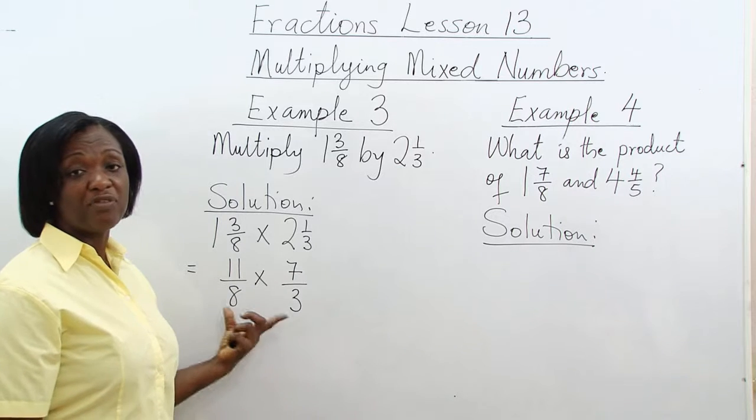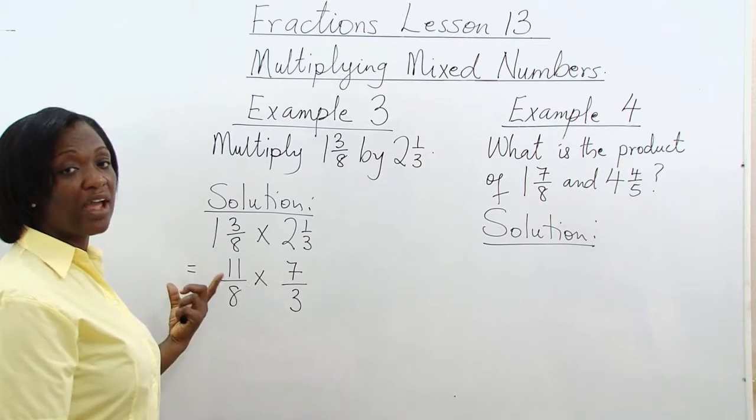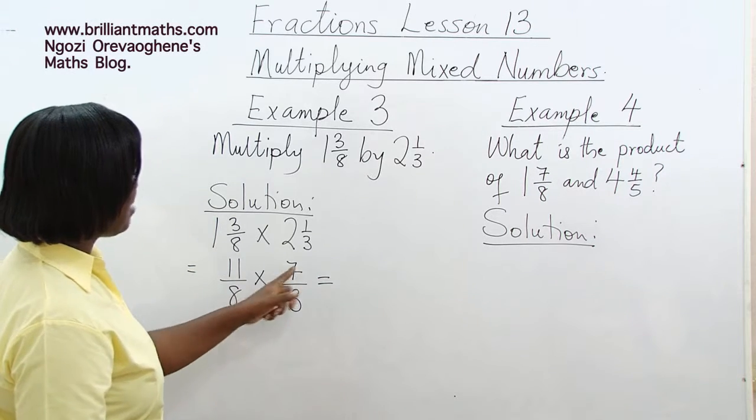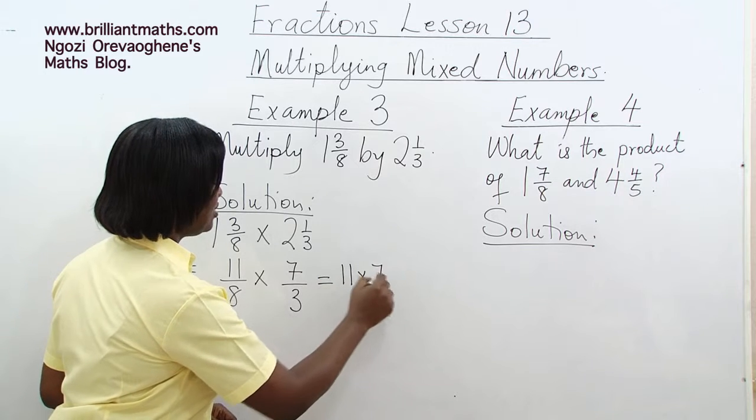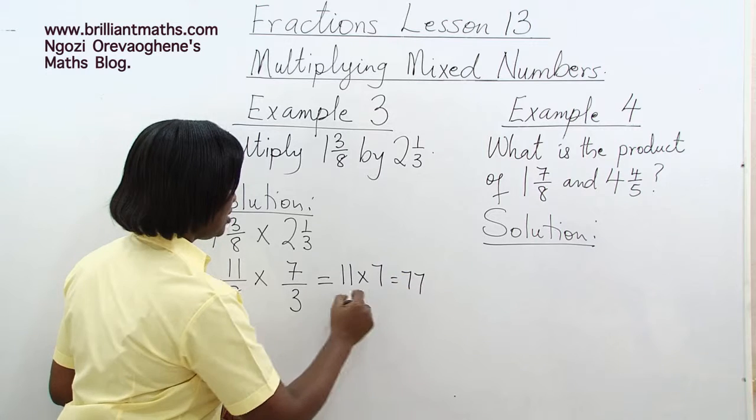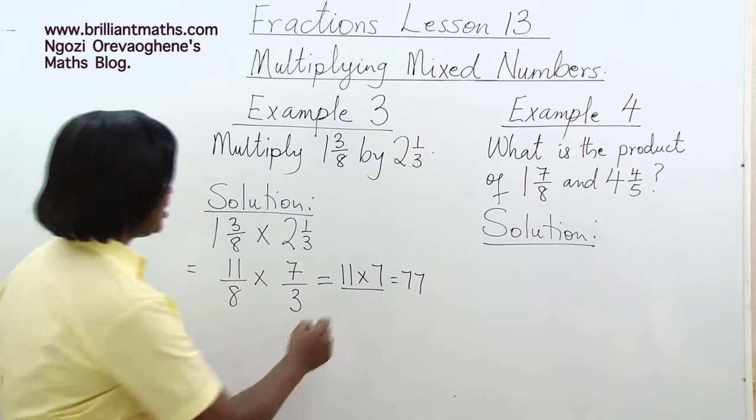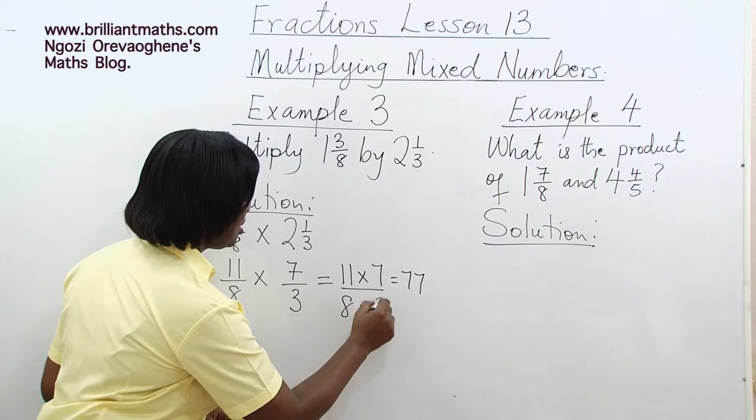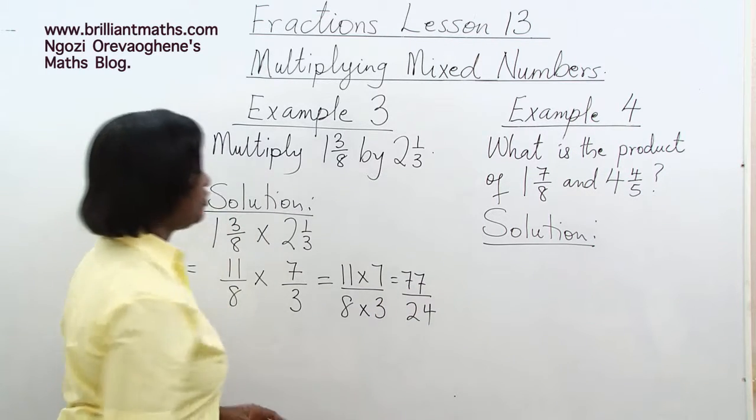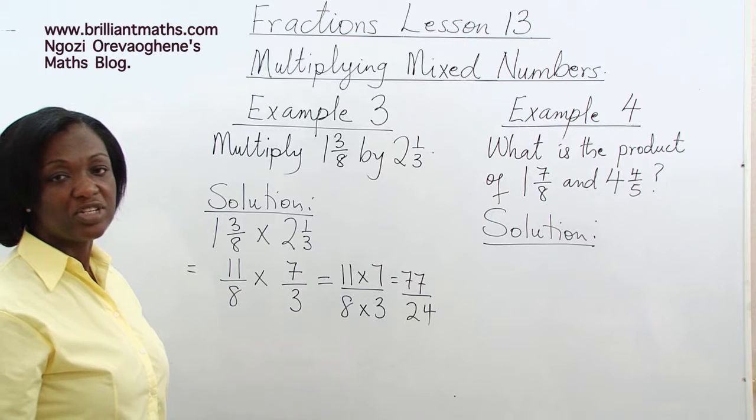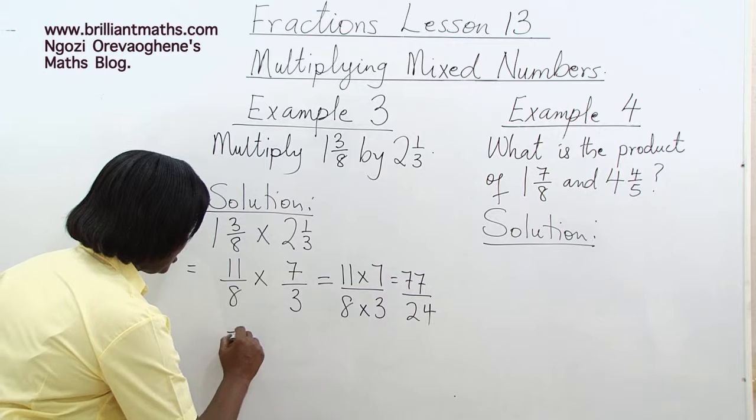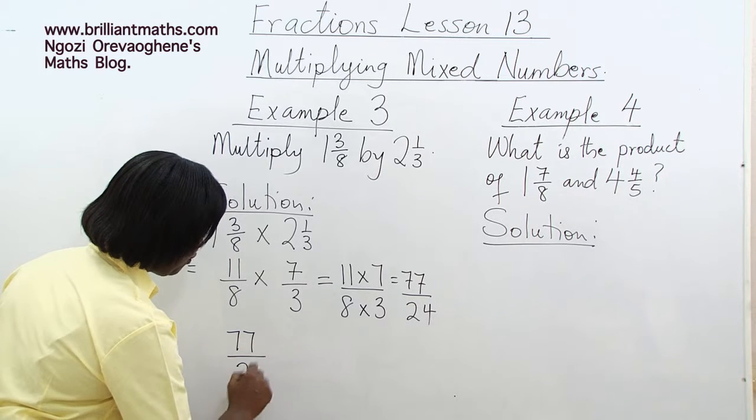When you don't have any common factors, you simply multiply the numerators and the denominators. 11 times 7 is equal to 77 over 8 times 3. 8 times 3 is equal to 24. This is an improper fraction, so we change it into a mixed number.